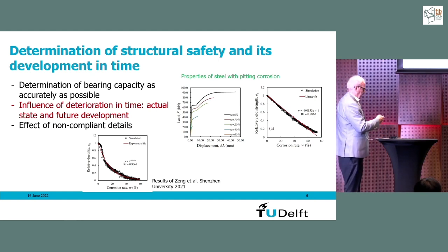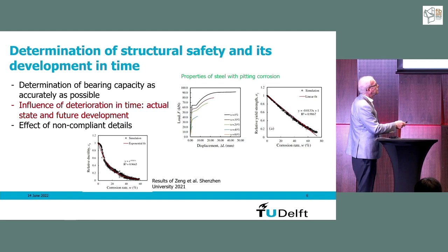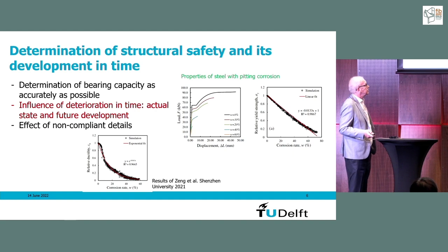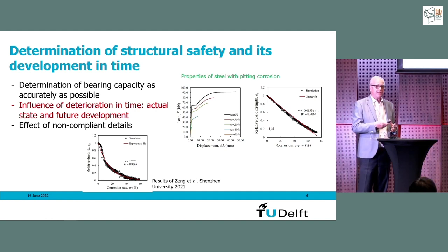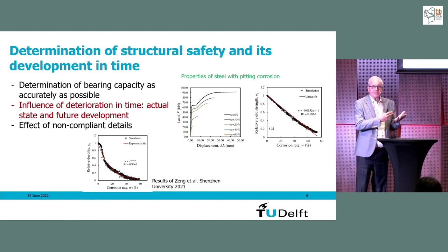If you take samples and compare their weight with the virgin weight, you can draw conclusions about properties. For instance, with a 10 percent weight loss, the capacity goes down and the ultimate strain goes down as well. There is a linear reduction for the ultimate capacity and a more exponential reduction for the ultimate strain. This is very important because in nearly all our models it is assumed that yielding deformation of the steel is not a limit. With substantial corrosion, the steel becomes more brittle, meaning redistribution processes are not as generous as before.